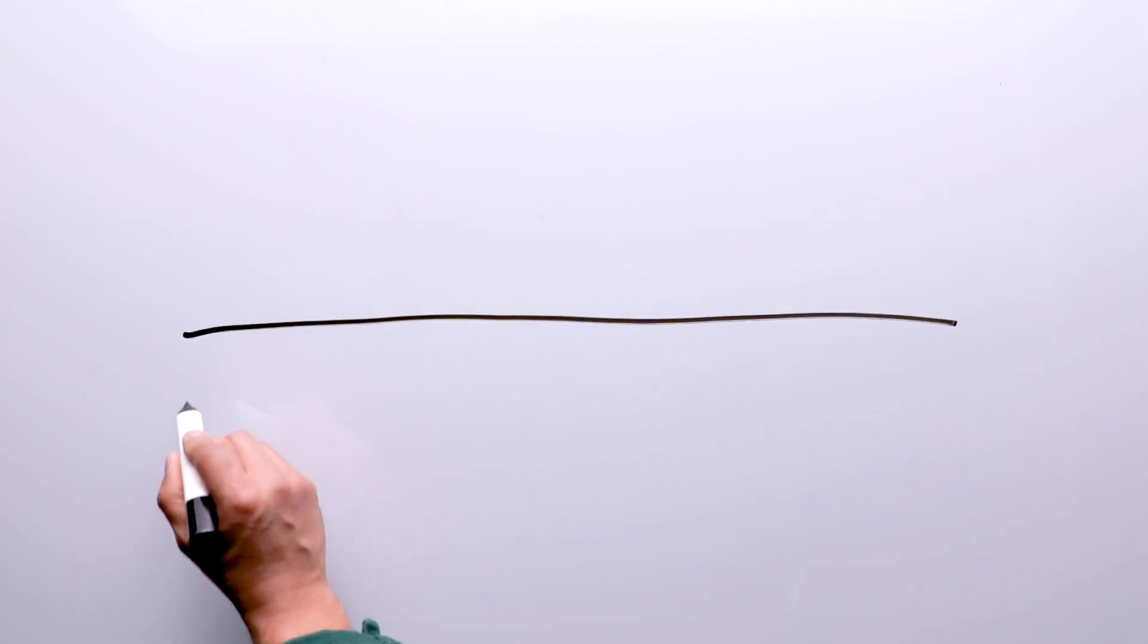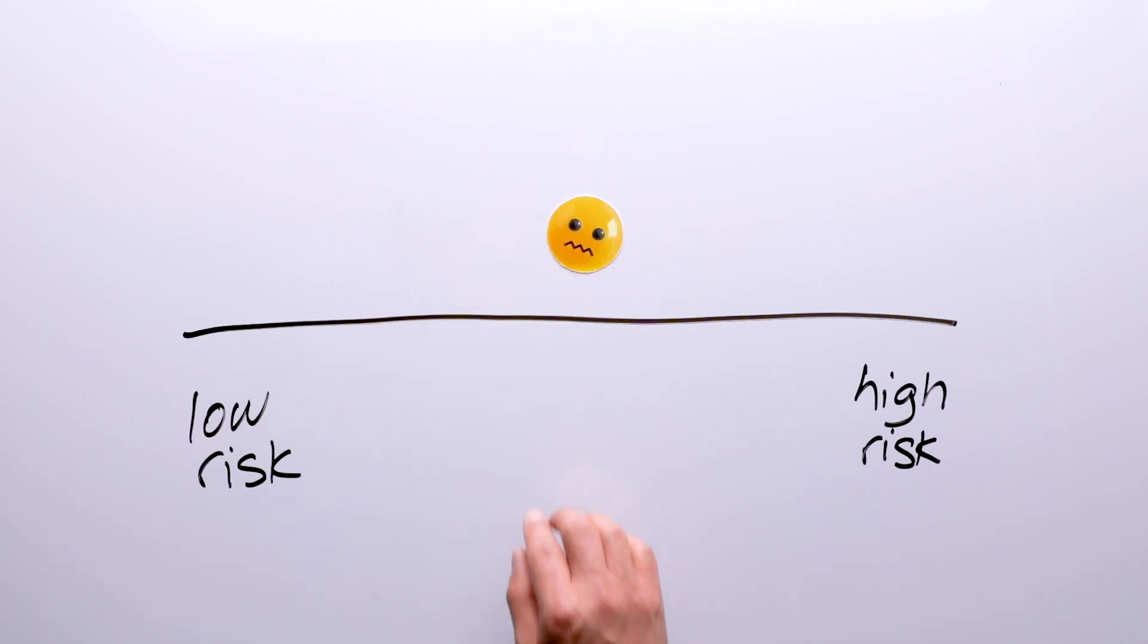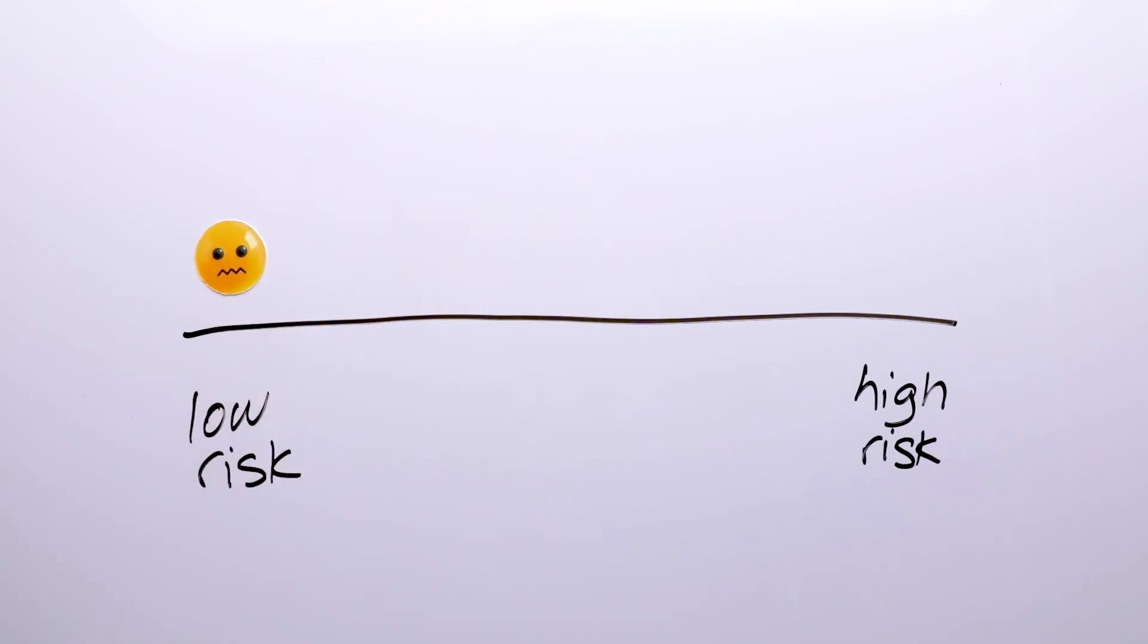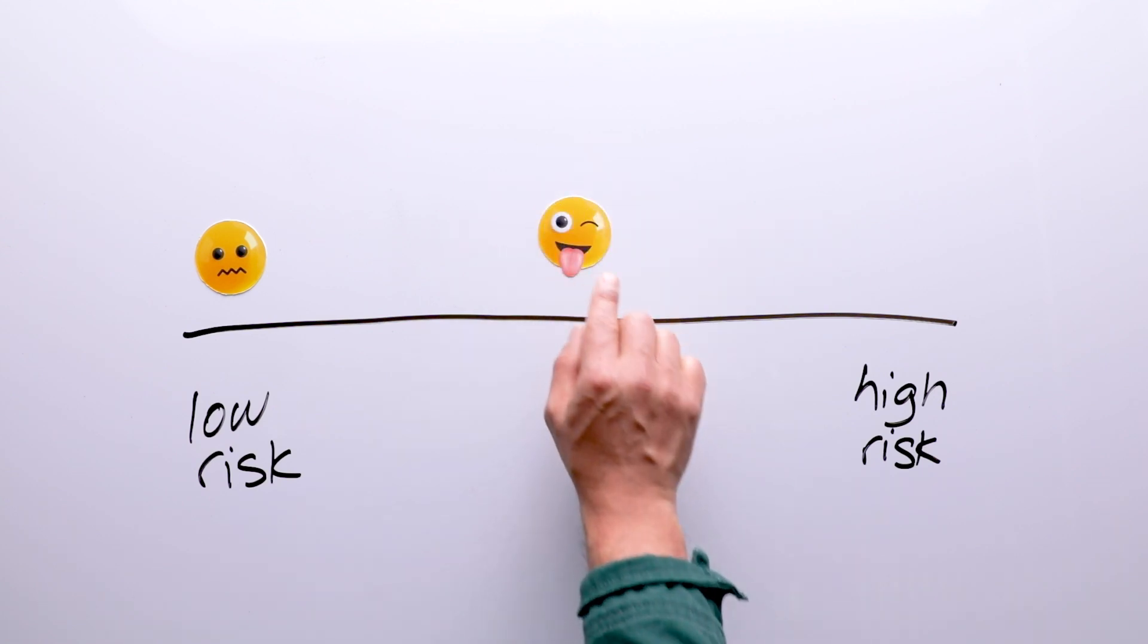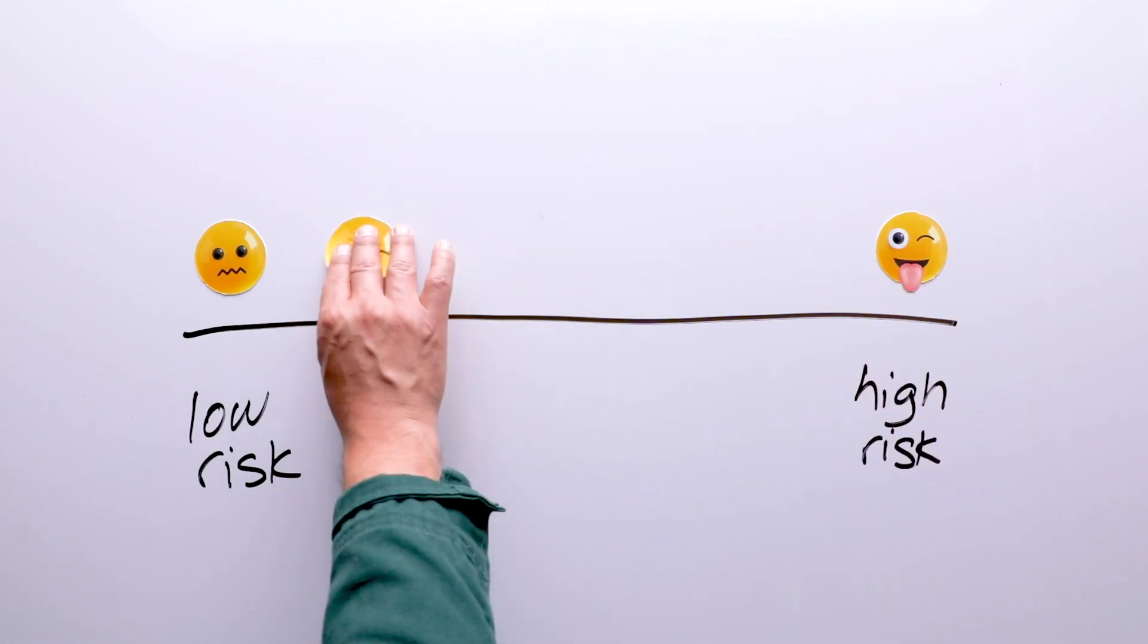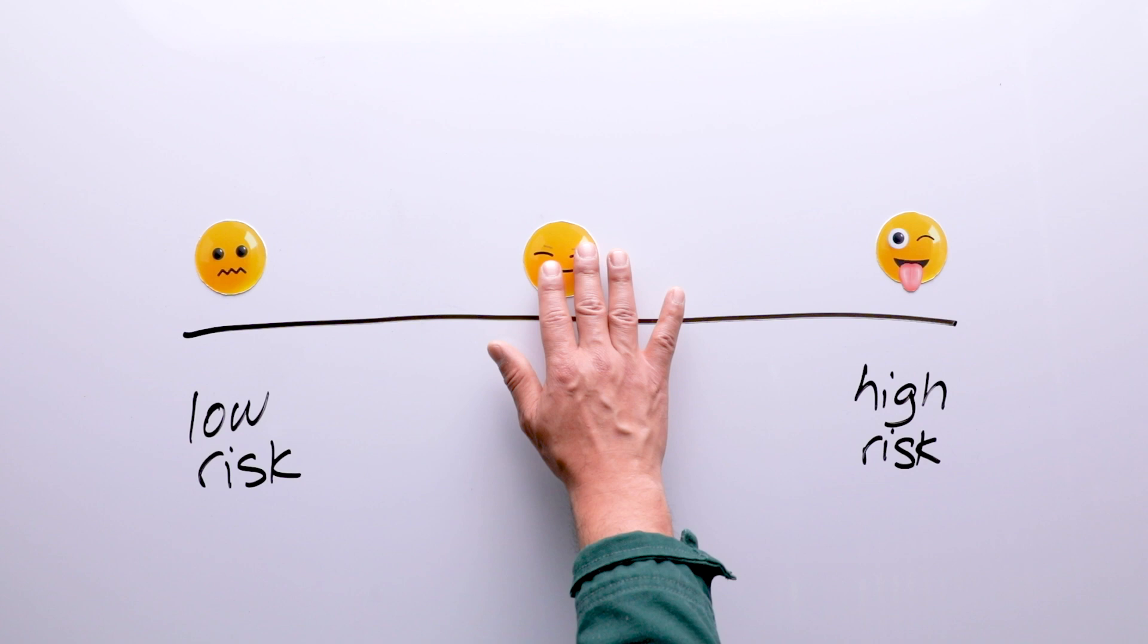Let's figure out your risk tolerance - your personal comfort level of making investments that could make you a lot of money or lose it. Do the unexpected twists and turns of the market leave you feeling queasy? You likely have a low risk tolerance. If you can roll with market ups and downs, your risk tolerance may be higher. Understanding where you fall can help you make investment choices that are right for you.